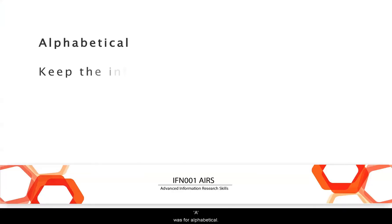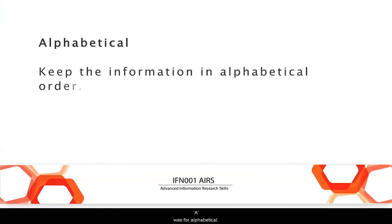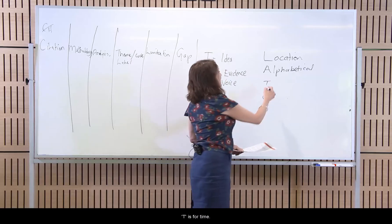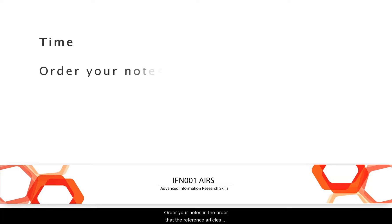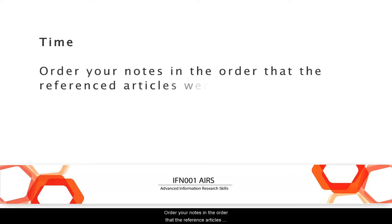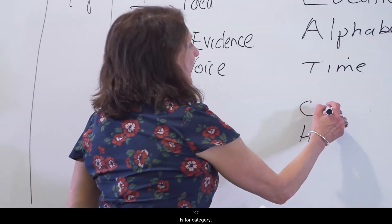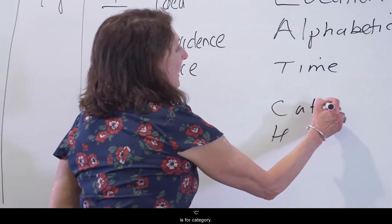A is for alphabetical — keep the information in alphabetical order. T is for time — order your notes in the order that the referenced articles were published.